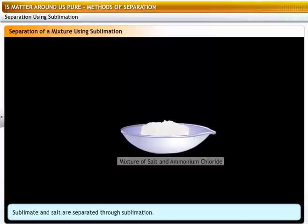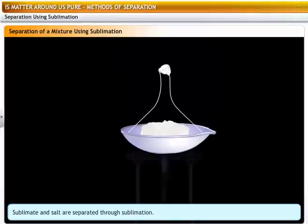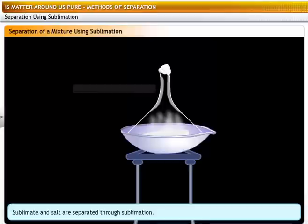Take the mixture in a china dish and cover it with an inverted funnel fitted with a cotton plug. Heat the mixture. In a short while, you will see vapors of ammonium chloride. Stop heating and allow the setup to cool. You will see a fine white powdery deposit on the sides of the funnel. This is solidified ammonium chloride.